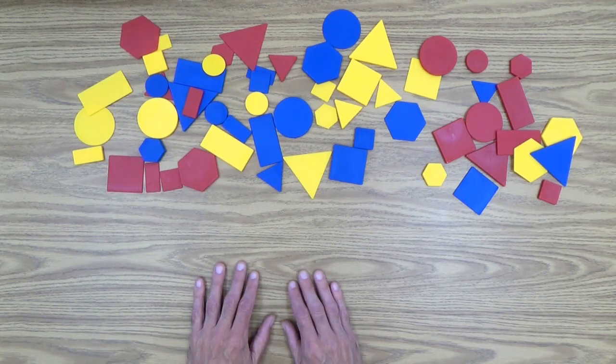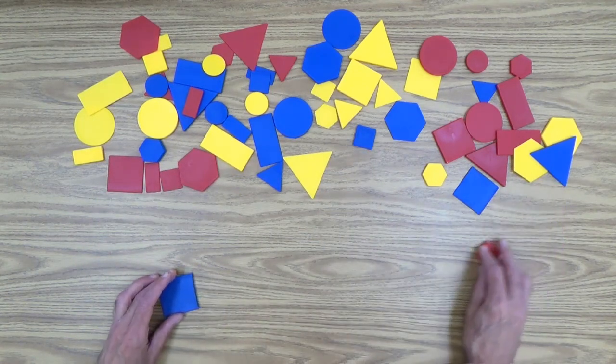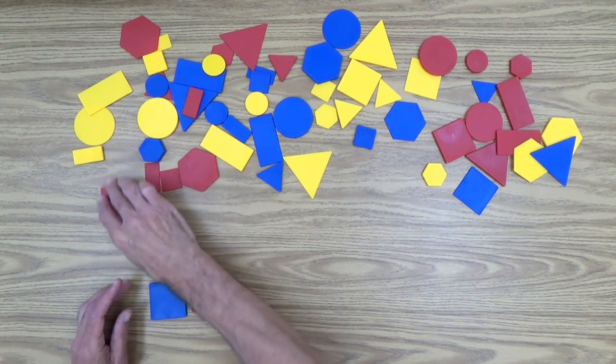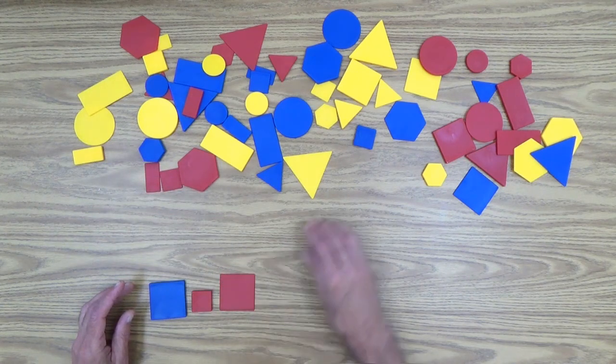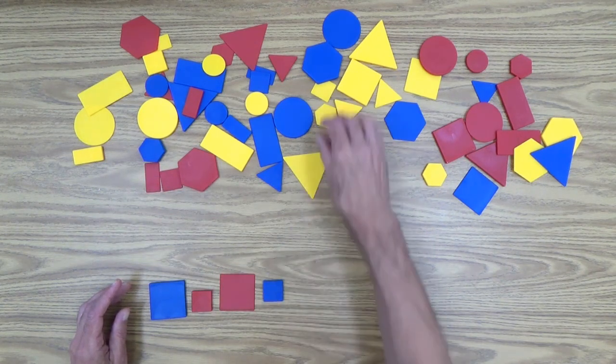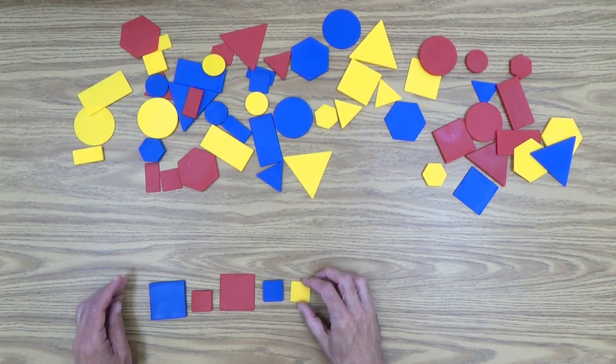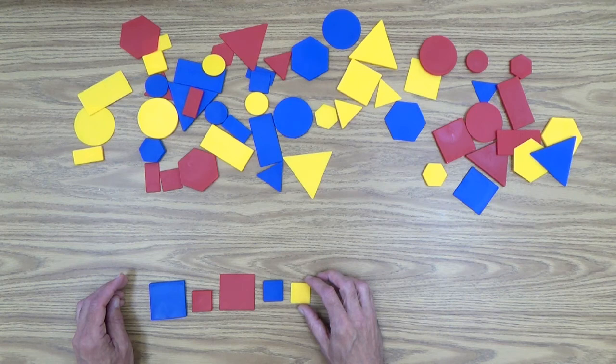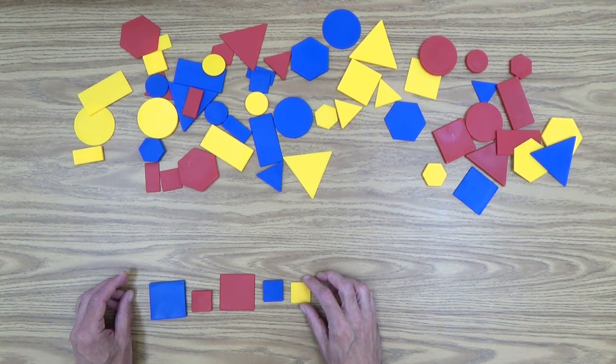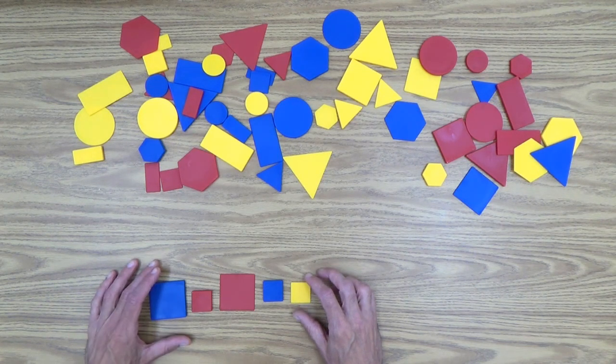Or maybe, let's see, you might do this. Start doing this. And by this point, she might say, oh, you're just pulling out all of the squares. You're sorting by squares.